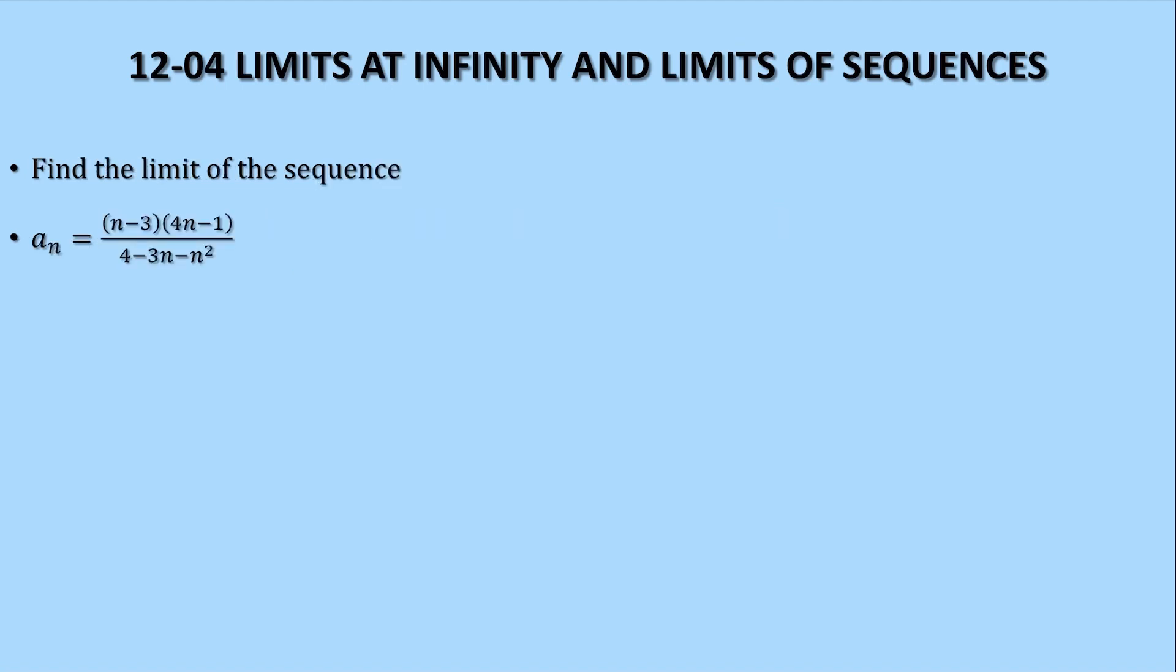So let's find the limit of the sequence, which means we're going to find the limit as n approaches infinity. So maybe on the top, we could multiply it out. 4n squared, that's negative 12n, and negative 1n would be negative 13n plus 3. And let's rearrange the bottom so it's in order of exponent.